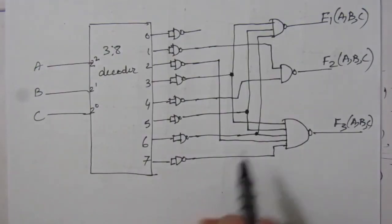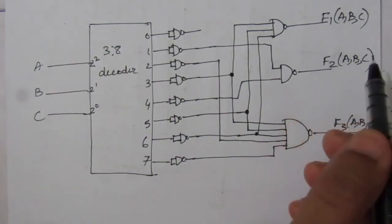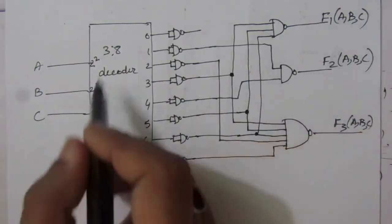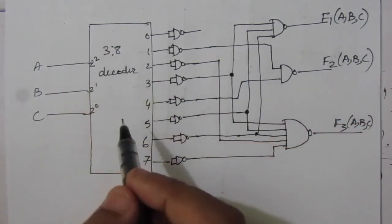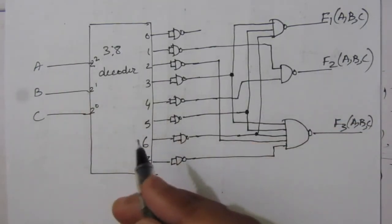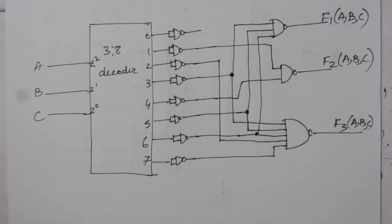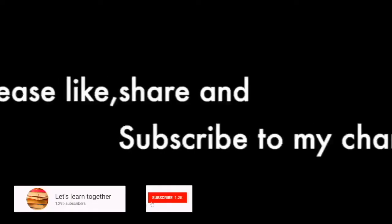This is the complete circuit diagram implementing the given Boolean functions using a 3-to-8 decoder. Thank you for watching — if you have any questions, please put them in the comment section below. Also like, share, and subscribe to my channel.